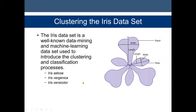If we have a training set of the Iris dataset, we can also use it for classification, whereby we build a model. Based on the model, the next time we have a new dataset, we can make a decision whether it belongs to one of these three classes: Iris setosa, Iris virginica, or Iris versicolor.